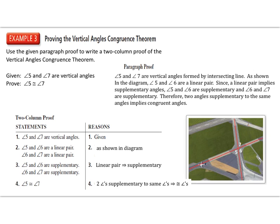Now let's see what it looks like as a two-column proof. Given always goes first. Then the next conclusion is that angle 5 and 6, and 6 and 7, are each a linear pair — as shown in the diagram. Since linear pair implies supplementary, that's our next statement and reason. Finally, because angle 6 is supplementary to both angle 5 and angle 7, we conclude angle 5 is congruent to angle 7 by the congruent supplements theorem.